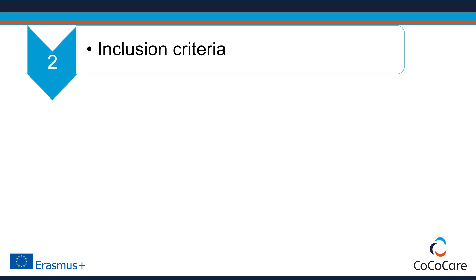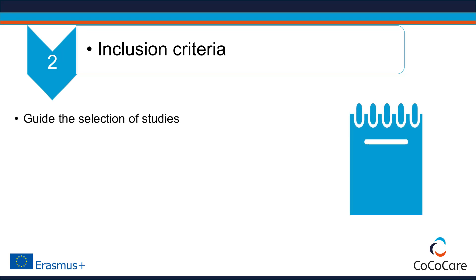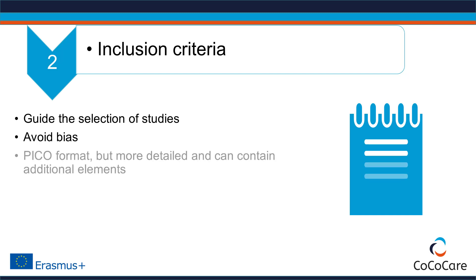After the research questions have been developed, explicit criteria about the inclusion and exclusion of studies have to be defined. These criteria will guide the selection of studies for the review. Defining inclusion criteria at the very beginning avoids bias — instead of choosing only studies that support their hypothesis, review authors must select studies based on rules set in advance. The inclusion criteria follow the same PICO format but are usually more detailed and can contain additional elements.